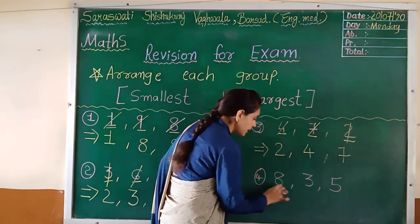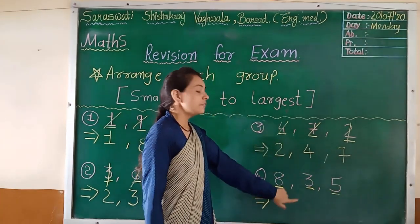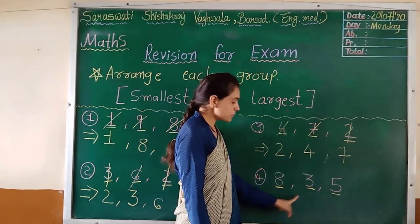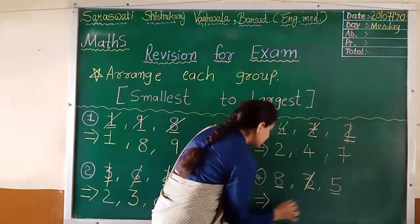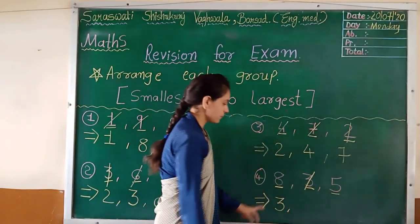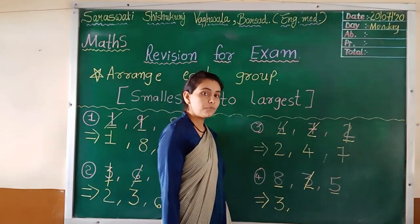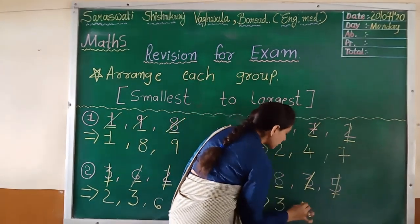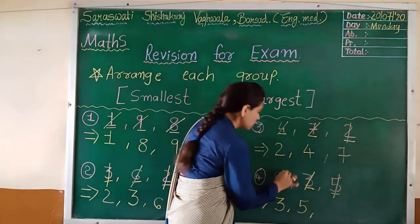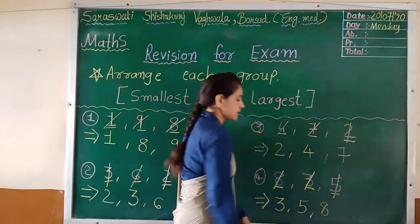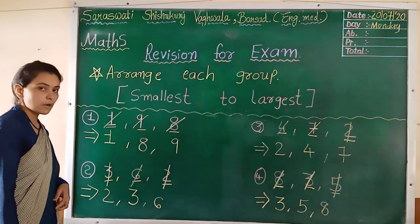Four, nine, eight. Then three, five. Now see, which is the small number? Eight, three, or five? Three, right? So, three cut and place here. Then eight and five. Which is the small number? Five. So, cut and place here, and then eight. So, answer is three, five, eight. Understood? So, we have to write smallest to largest number.